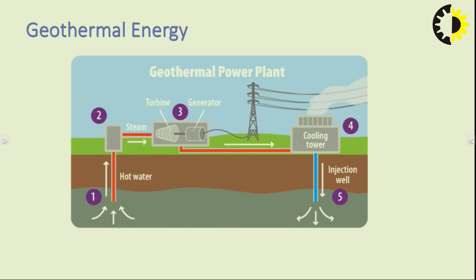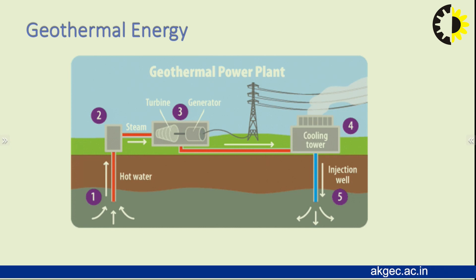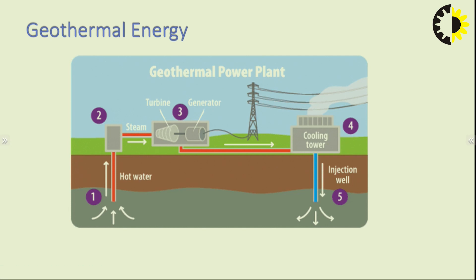Electricity gets generated, and there is also a cooling tower where cooling takes place. Along with this, there is an injection well through which the water gets released out. This is the basic structure of how geothermal energy gets generated and how we utilize geothermal energy sources.